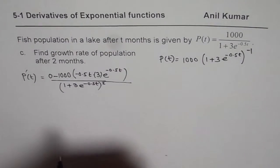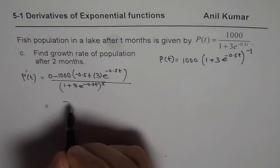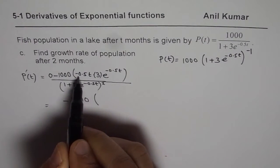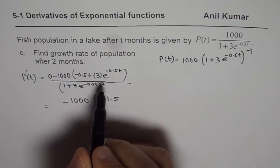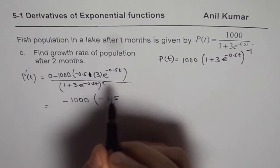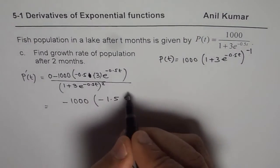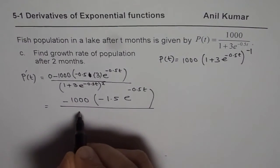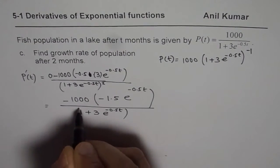So that is the derivative of this particular function. Clearly, it is minus 1000, and within brackets 3 times minus 0.5 gives me minus 1.5 — and there is no extra t here, I am sorry for that — so it is minus 1.5 times e to the power of minus 0.5t in the numerator, divided by 1 plus 3e to the power of minus 0.5t, whole squared.